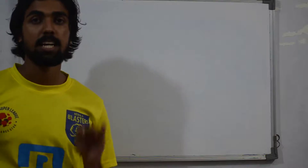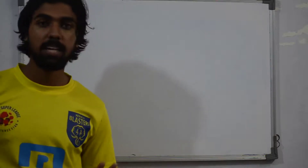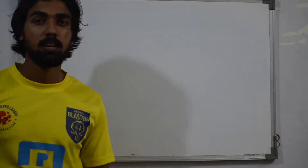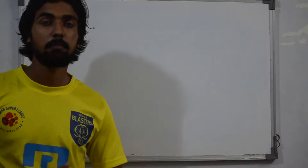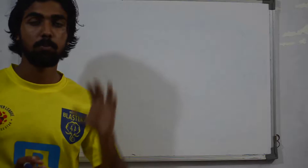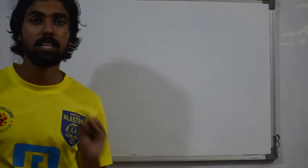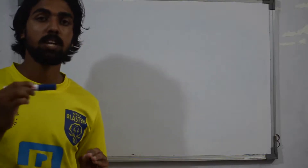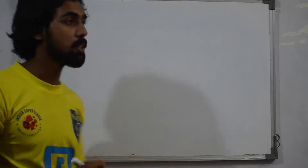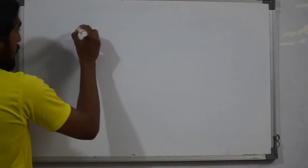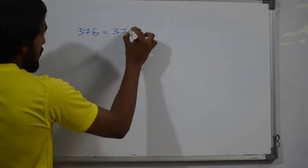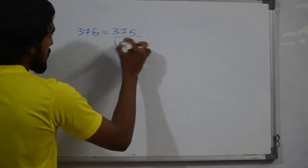A rational number can be expressed as decimals. If you terminate the rational number, it will be in p by q form. Q will be of the form 2 raised to n into 5 raised to m. That is the condition for a rational number to have a terminating decimal.